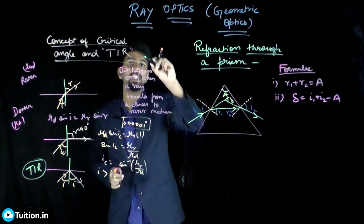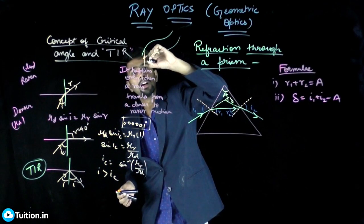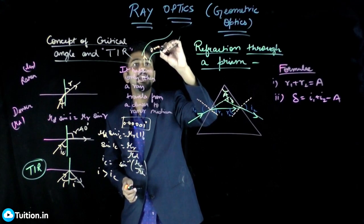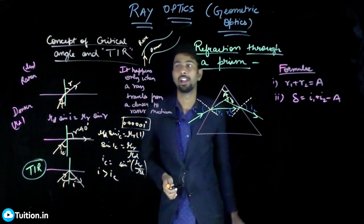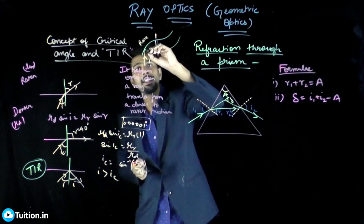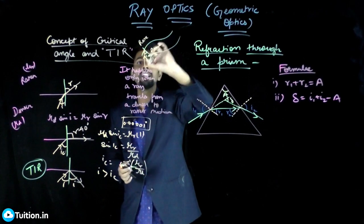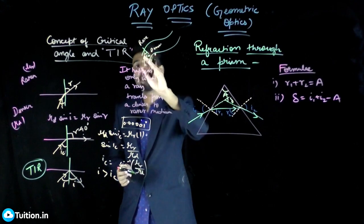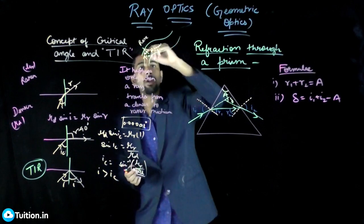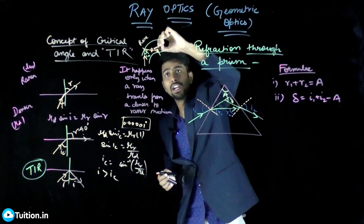This concept is widely used in optical fiber signal transmission. In an optical fiber, the inside core is optically denser and the outside medium is rarer. When light travels from the denser core to the rarer cladding, total internal reflection is possible. If you incident at slightly greater than the critical angle, the ray gets reflected back inside.